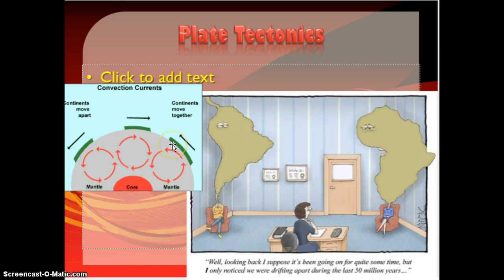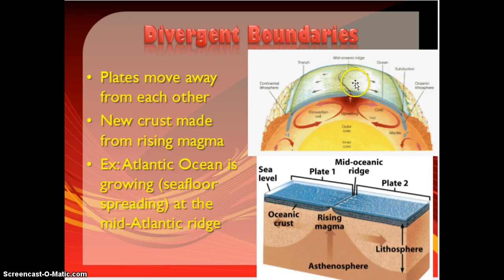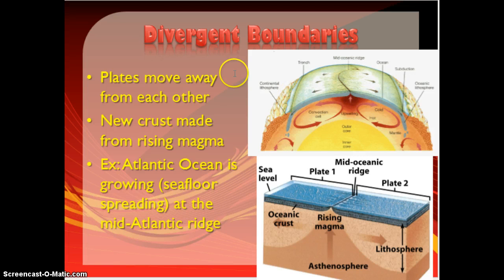This leads to the different types of boundaries we see between plates. One of those types is called a divergent boundary. With these convection currents moving away from each other, they push the crust on top of them apart. As you push two plates away from each other, you get an empty area in the middle, so new crust has to form. That happens when magma upwells, and this is happening at the mid-ocean ridge in the middle of the Atlantic right now — magma is coming up from the mantle and forming brand new seafloor. This is called seafloor spreading.